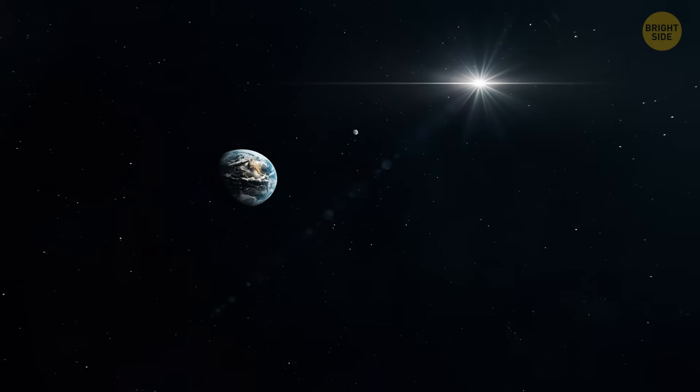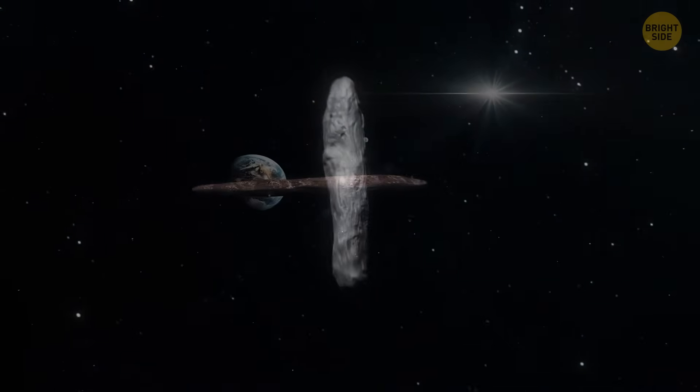Even more bizarre, its orbital plane is almost at a right angle to the path of 3I Atlas. Plus, it doesn't have a clear comet tail, which is odd.